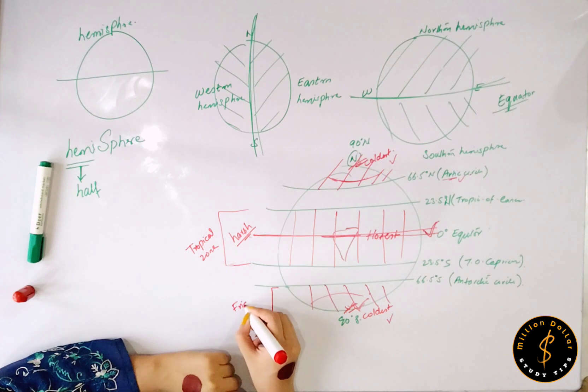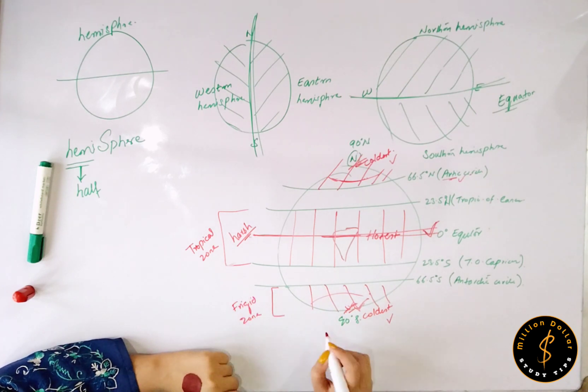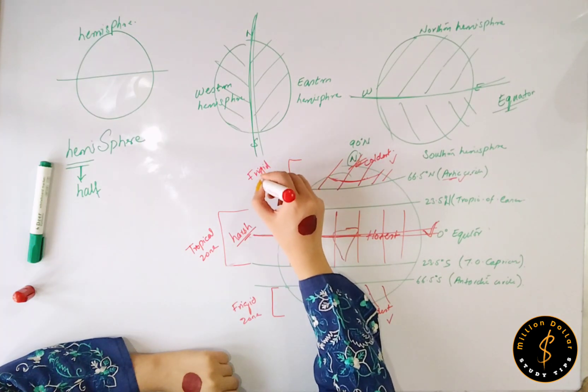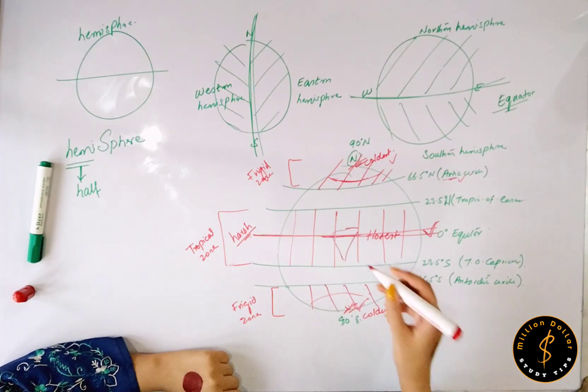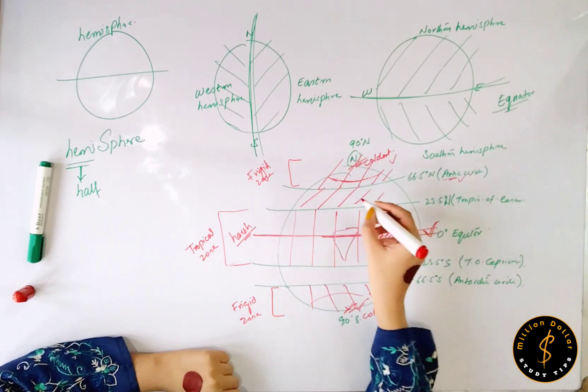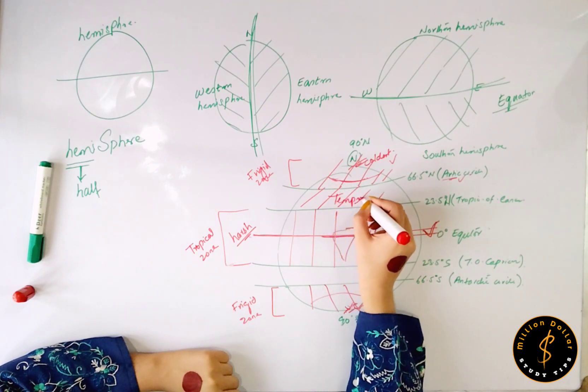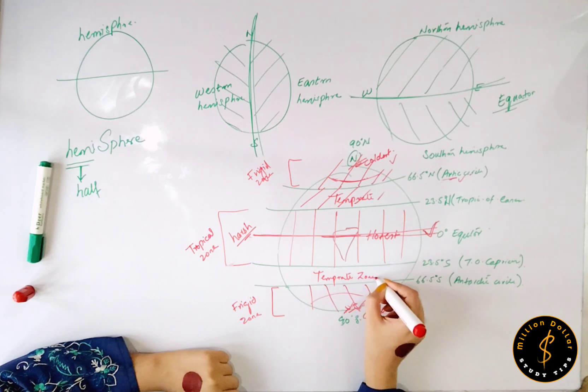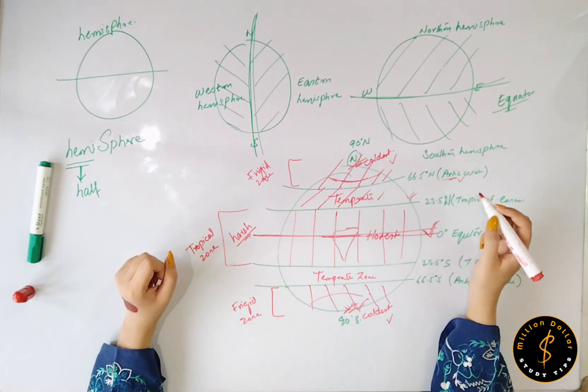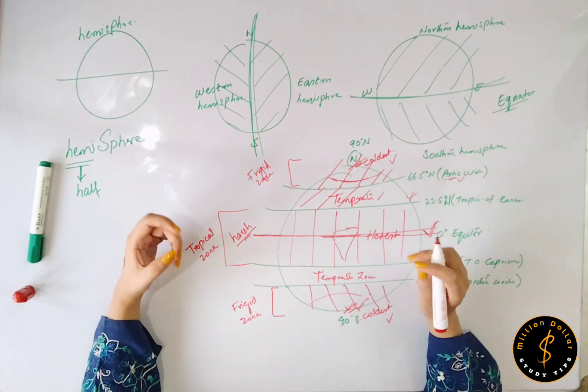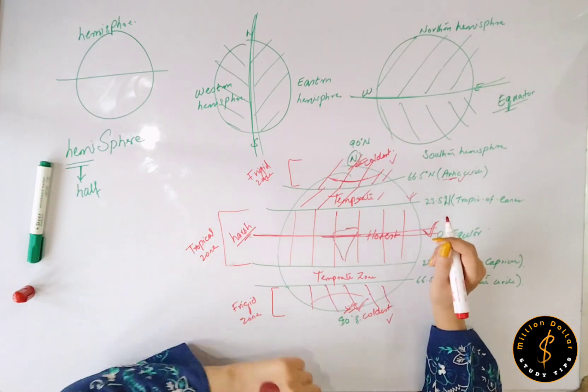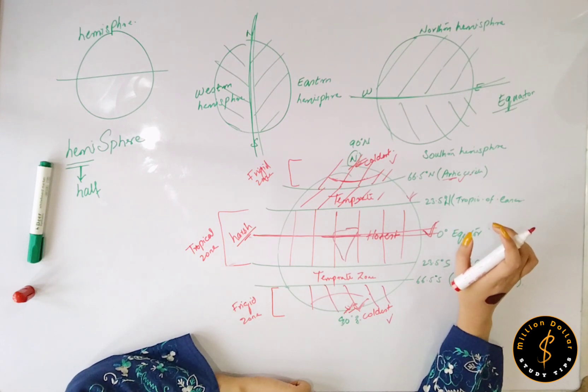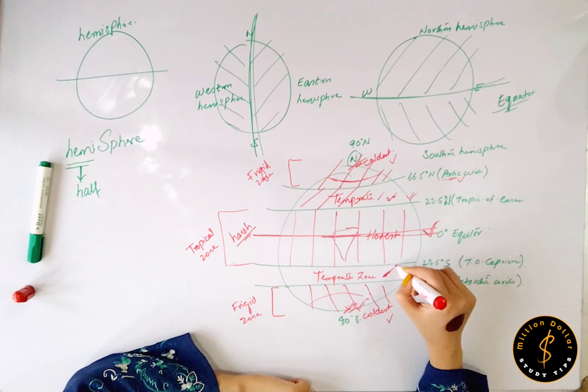This is your Frigid zone and exactly this is also your Frigid zone. These are the coldest regions. Now here we have Temperate zone, this is also your Temperate zone. And here we enjoy all the seasons: winter, autumn, spring, summer, exactly as we experience in Pakistan, India as well. So this is the most favorable environment for living that exists in the Temperate zones.